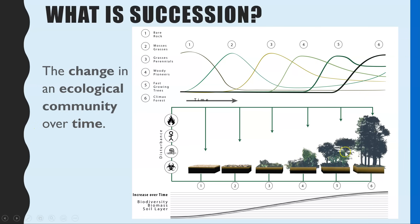The key thing is that succession occurs over time, not over distance. Although most diagrams look like they're changing over distance, what they're actually representing is one particular area or plot of land at different periods of time. Each of these stages is called a seral stage — S-E-R-A-L — which is when you see a noticeable difference in the community.